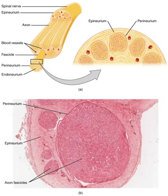The axons are bundled together into groups called fascicles, and each fascicle is wrapped in a layer of connective tissue called the perineurium. Finally, the entire nerve is wrapped in a layer of connective tissue called the epineurium. In the central nervous system, the analogous structures are known as tracts.